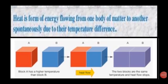What is heat? Heat is a form of energy that is transferred between two substances at different temperatures. The direction of energy flow is from the substance of higher temperature to the substance of lower temperature. Heat is a form of energy flowing from one body of matter to another spontaneously due to their temperature difference.